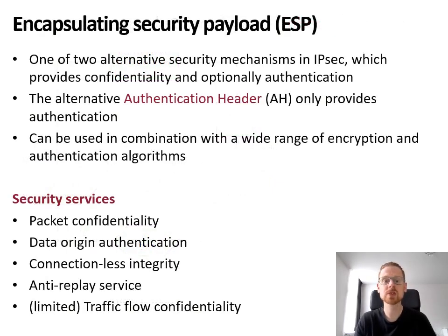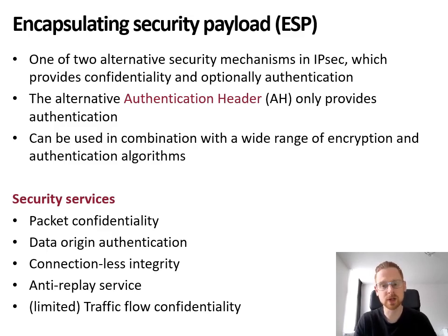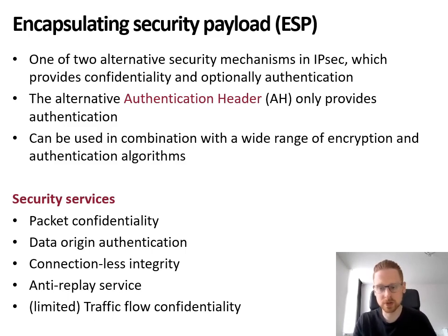IPsec provides two alternative methods to enable security. The first one is ESP, which stands for Encapsulating Security Payload. The other one is AH, which stands for Authentication Header. ESP is more flexible since it can provide both confidentiality through encryption and authentication, while the Authentication Header can only provide authentication. ESP can be used in combination with a wide range of existing encryption and authentication algorithms, so it does not dictate which specific algorithm must be used. On top of authentication and confidentiality, it provides origin authentication, integrity of the packet, an anti-replay service, and traffic flow confidentiality to avoid traffic analysis.